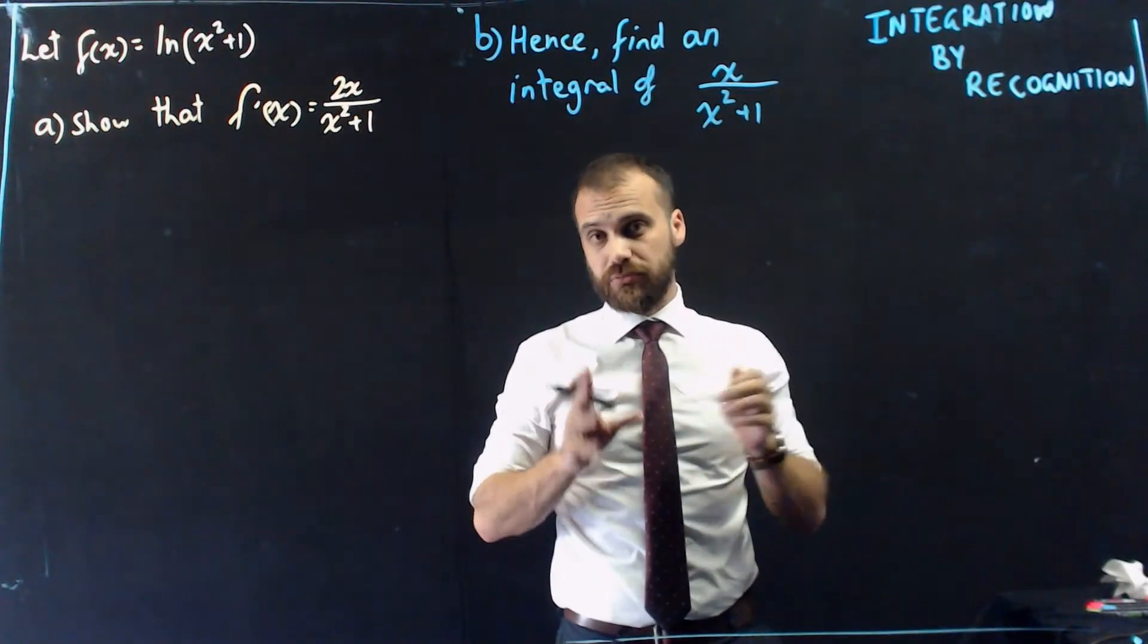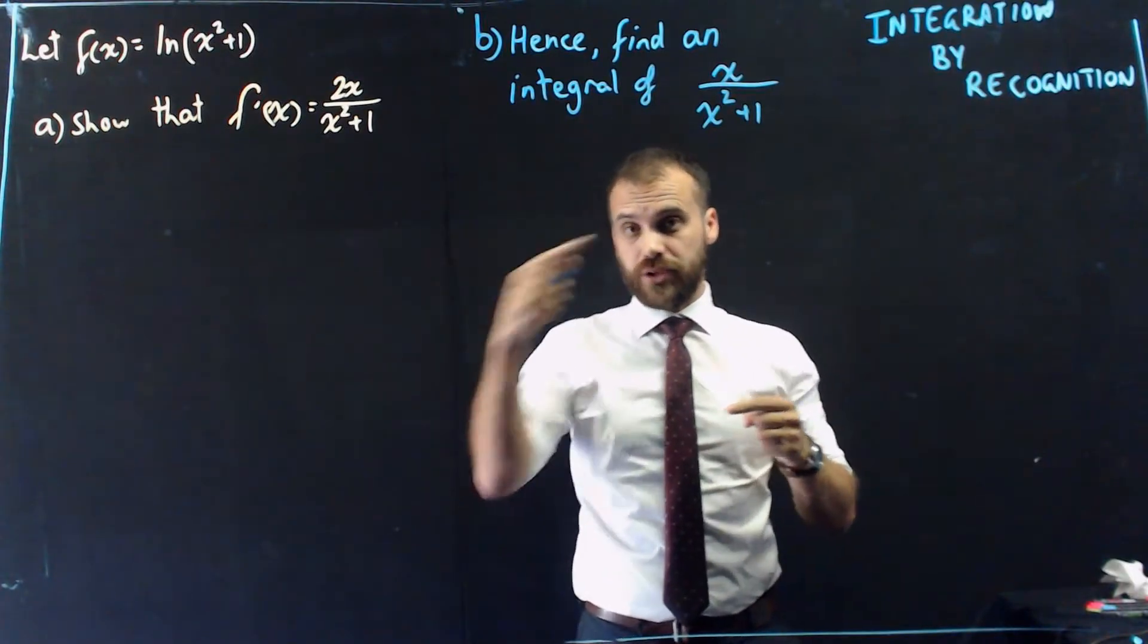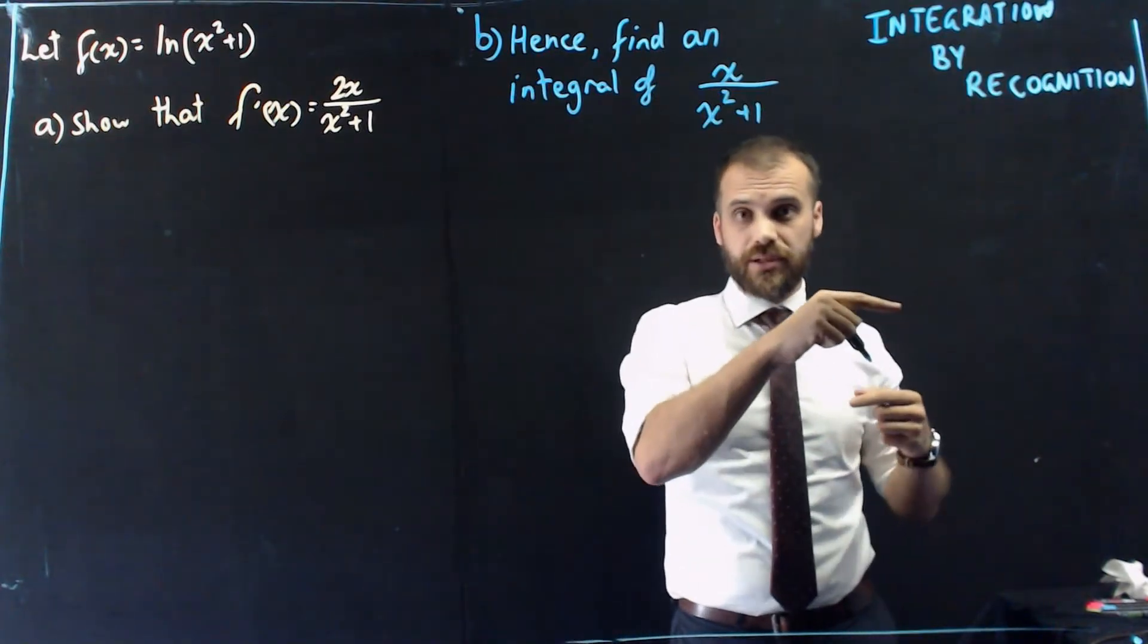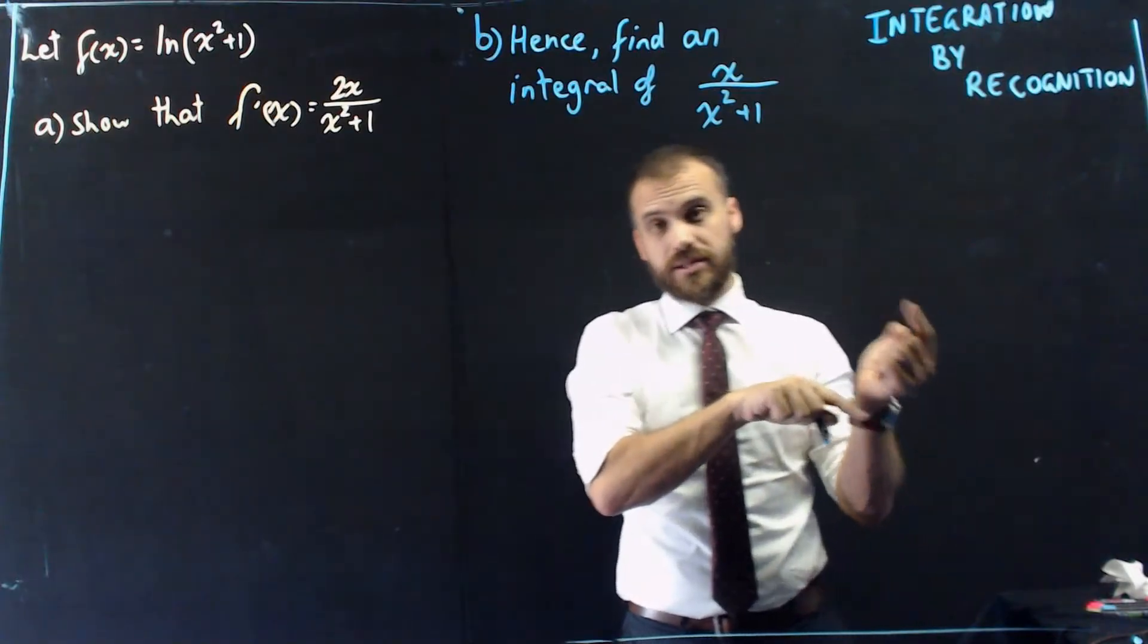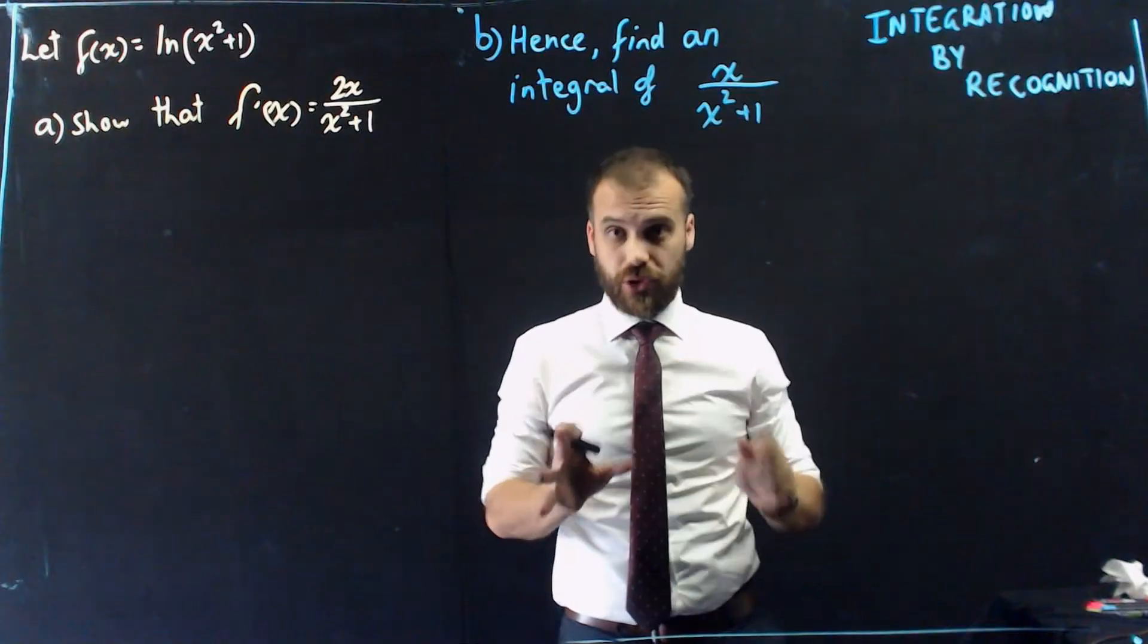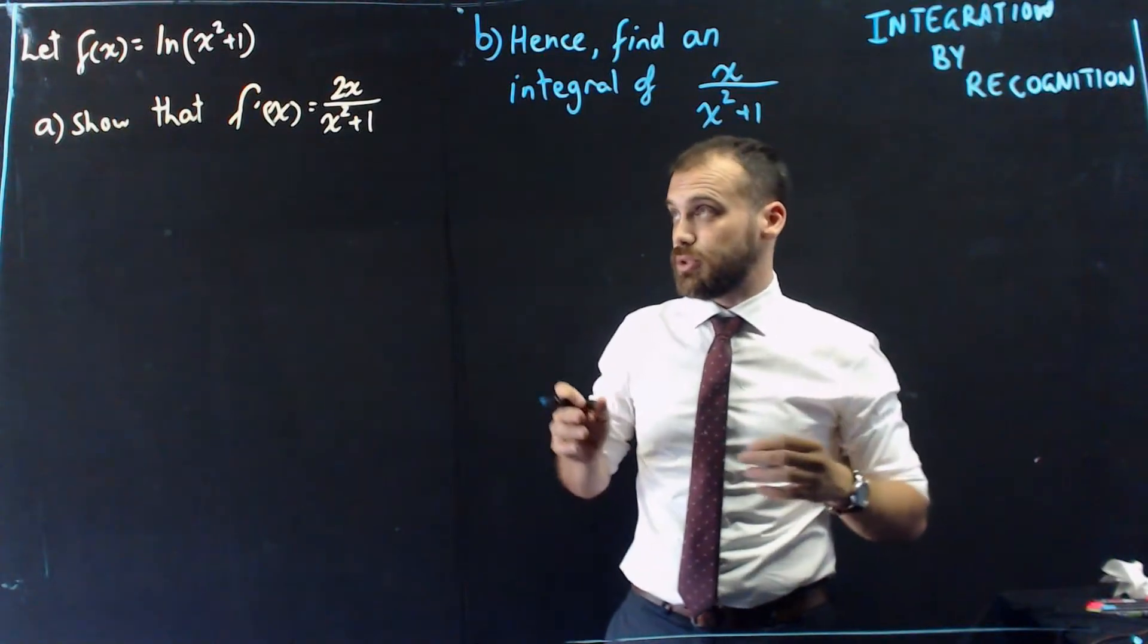Integration by recognition relies on the fact that derivatives and integrals are opposites. If you find the derivative of something, and then you find the integral of your answer, you'll go back to where you started from. And that's what integration by recognition relies upon. So I'm just going to jump into a question and you'll see how this works.